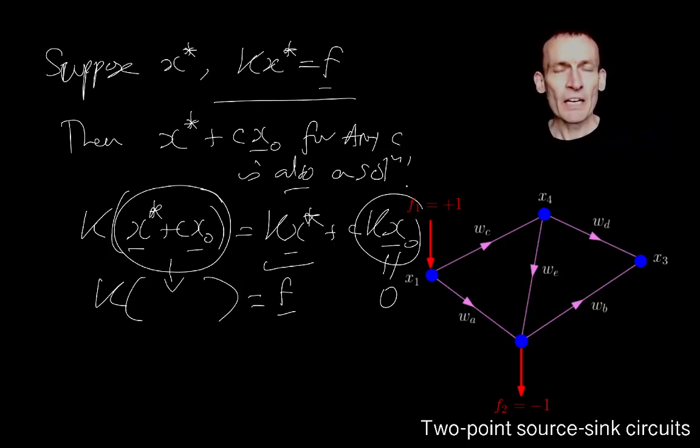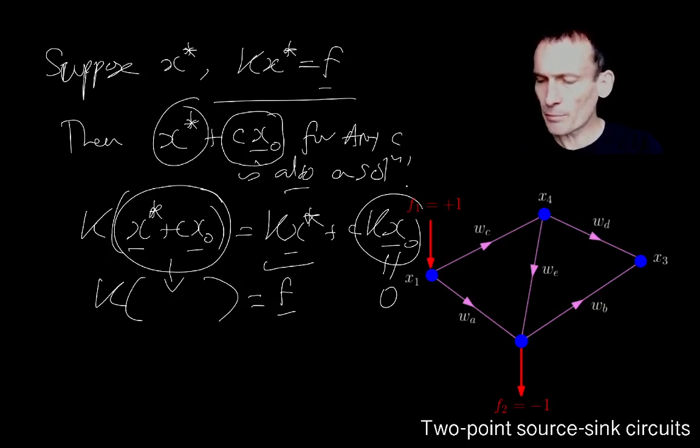So this thing also satisfies KX is equal to F. So it's another solution. So, in other words, this singular nature of K, the fact that this inverse doesn't exist, is connected with the fact that I can add arbitrary multiples of my X0 vector to any solution that I might have found. But think what that means.